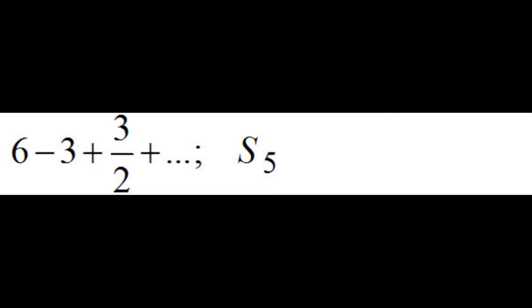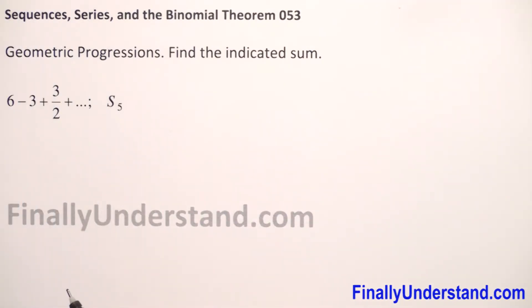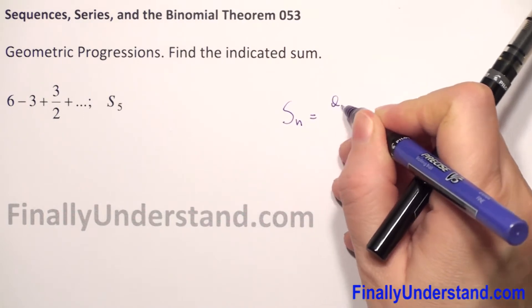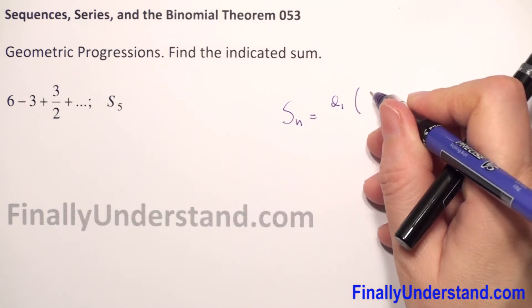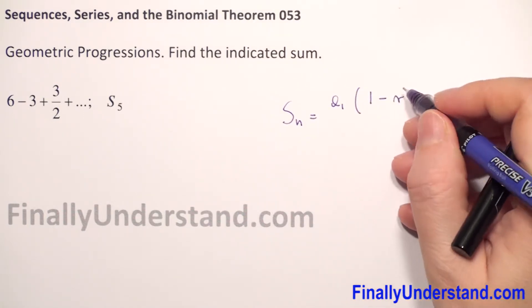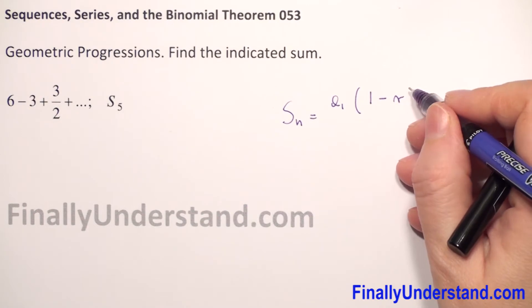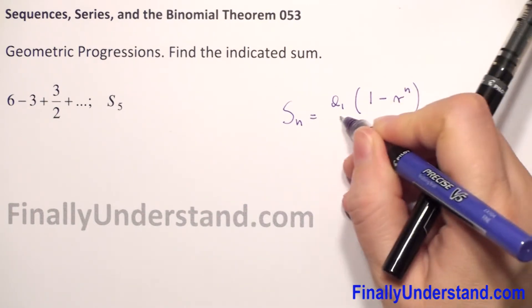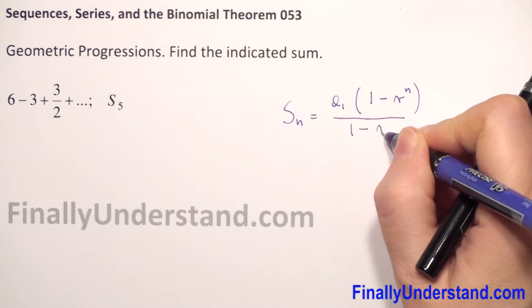We have to find the sum of the first five terms of a geometric progression. Let me remind you of the formula for the sum of n terms of a geometric progression: Sn equals A1 times (1 minus R to the power n) over (1 minus R).